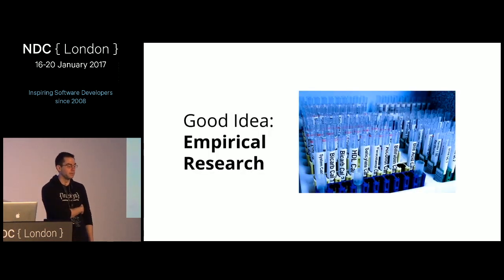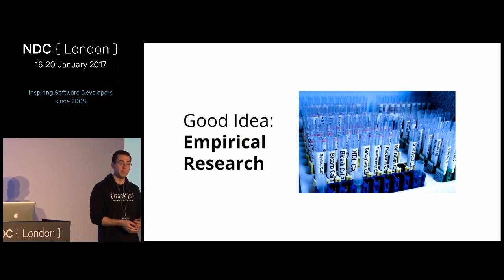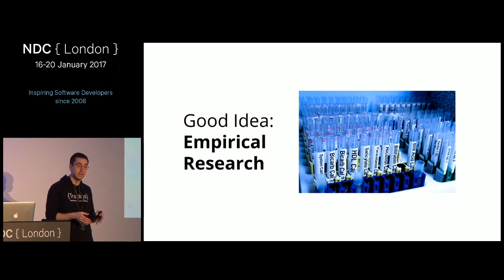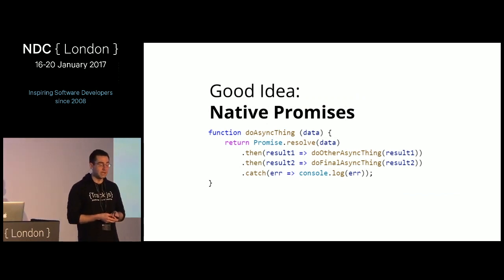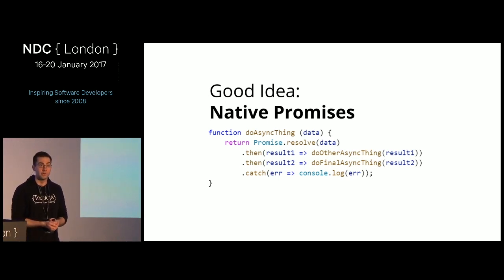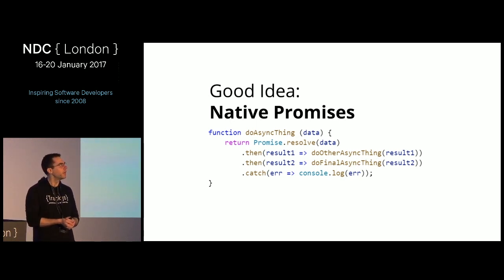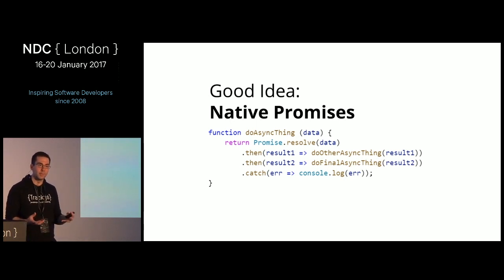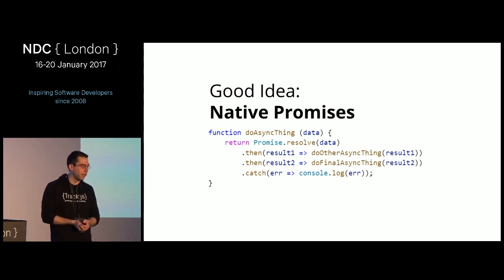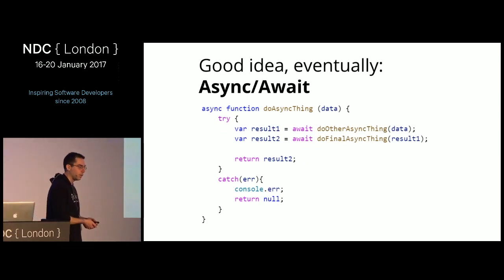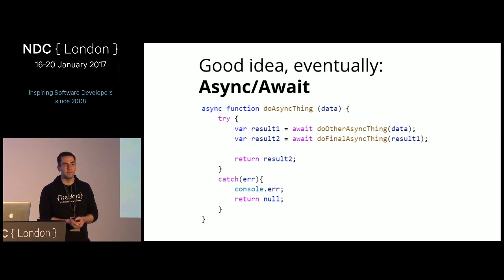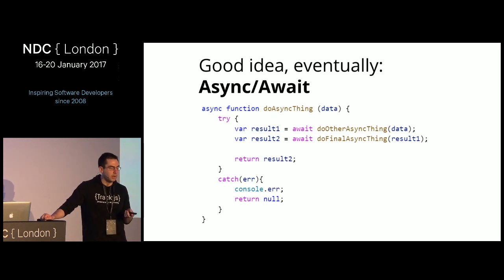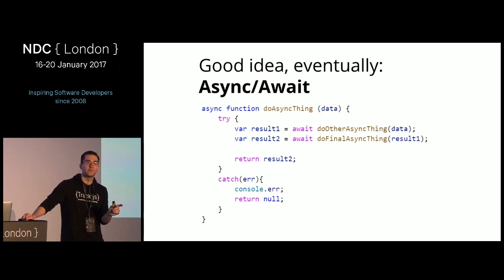Just like empirical research was a good idea in medicine and has stood the test of time, I think native promises are going to do the same. jQuery put promises on the map with Deferreds, and promises are now standard in ES6 with almost all browsers supporting them natively and polyfill libraries available otherwise. The really interesting thing coming is async/await — the syntax looks very similar to C#'s implementation. You're still dealing in promises, but there's syntactic sugar to unwrap them, and you can use regular try/catch semantics for error handling.